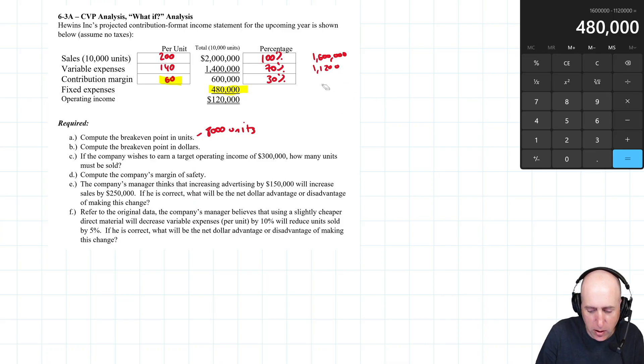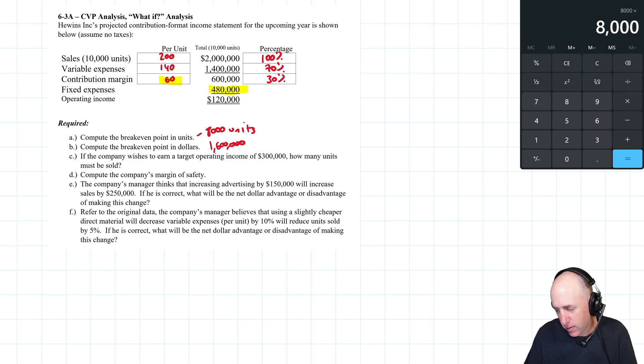What's the breakeven point in dollars? Should be pretty easy here. We sell at $200 a unit, we need to sell 8,000 units to break even. It's 1.6 million would be our breakeven point in dollars. That's just 8,000 units times 200 bucks a unit.